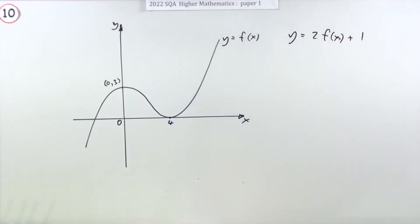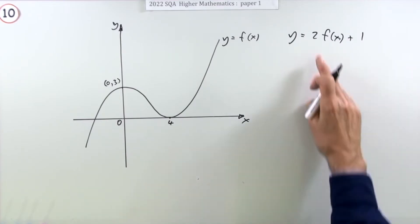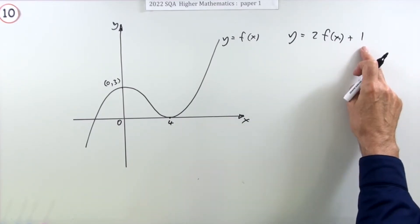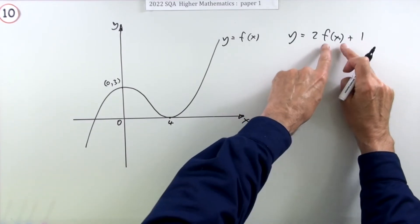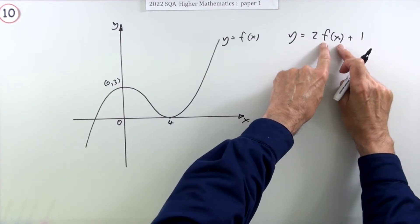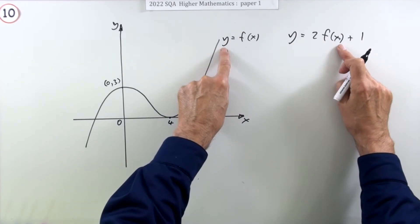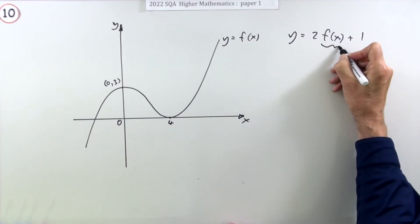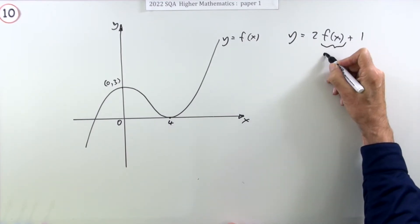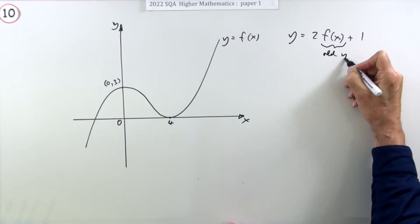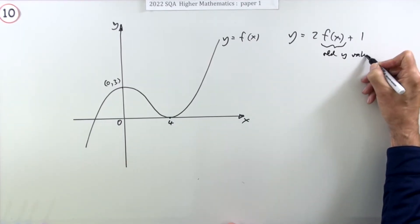There's three marks for producing this. Well there's only two things happening to it. What you have to remember first of all is f of x is the original calculation, that's the original y coordinate. This part here is the same as the original or the old, if you like, the old y value that you would have had at x.